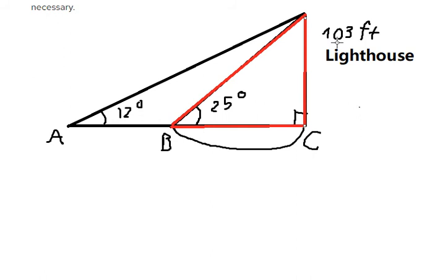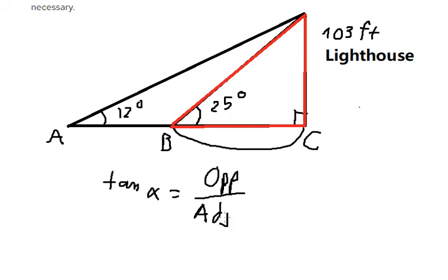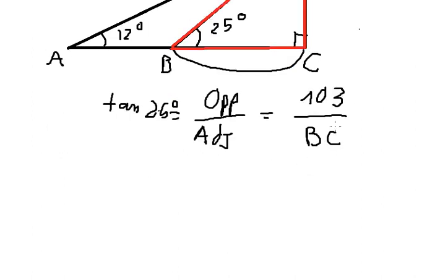So we have the height of 103, which is the opposite side. To find BC, we can use the tangent function: tan(alpha) equals opposite divided by adjacent. So BC is the adjacent side for the angle of 25 degrees, and the opposite is 103, with alpha equal to 25 degrees. Therefore, BC equals 103 divided by tan(25).